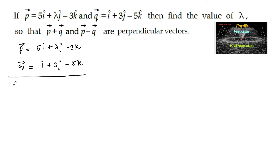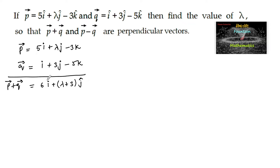Let us find the sum. p plus q is equal to 5 plus 1, that is 6 times i, and here λ plus 3 of j, and here minus 3 minus 5 which comes to minus 8k.